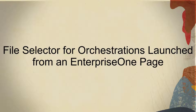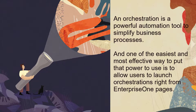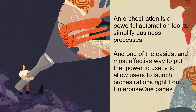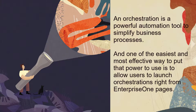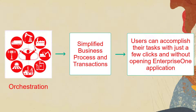File selector for orchestrations launched from an Enterprise One page. An orchestration is a powerful automation tool to simplify business processes, and one of the easiest and most effective ways to put that power to use is to allow users to launch orchestrations right from Enterprise One pages. Using orchestrations, any business processes and transactions can be simplified into a few simple inputs, or perhaps no inputs at all. In this way, users can accomplish their tasks with just a few clicks and without even opening a single Enterprise One application.